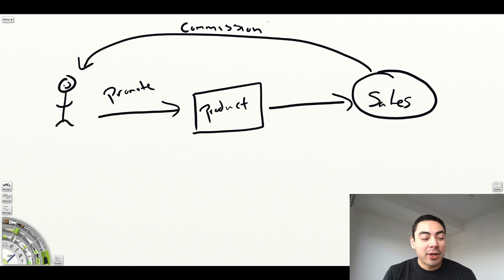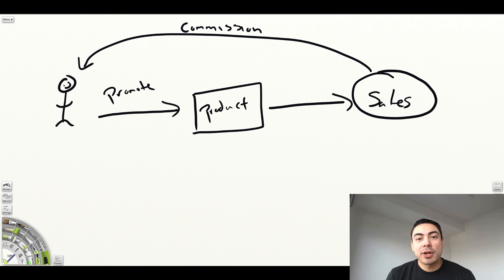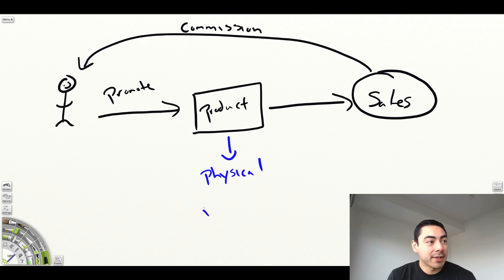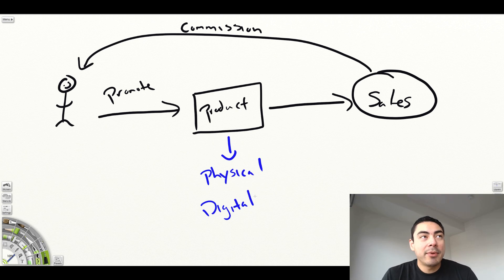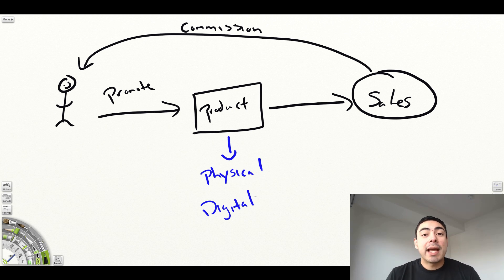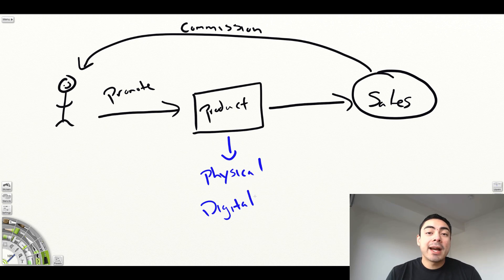When it comes to the different types of products you can actually sell, you have two main options: physical products and digital products. For physical products, probably the most common example is Amazon Associates. Amazon has an affiliate marketing program where you sign up, get assigned a specific affiliate link, and every time someone clicks it and buys a product — say, a digital camera — you make a commission.